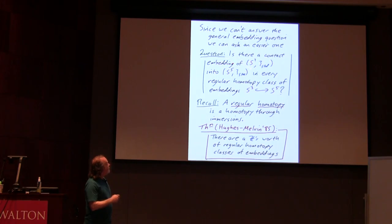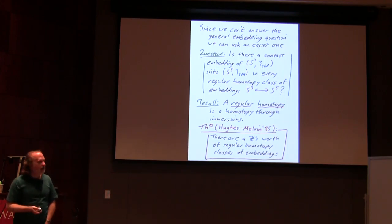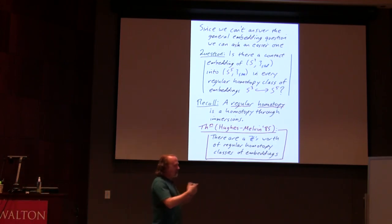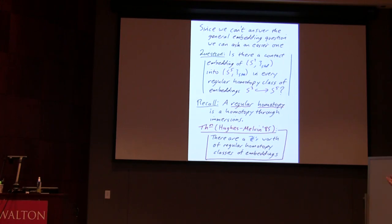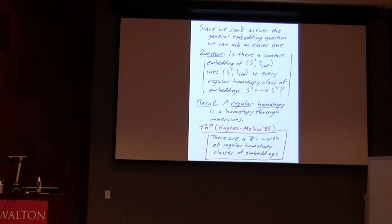At the moment, we don't really know how to get all embeddings. So if you can't get all embeddings, the next step you might try is regular homotopy classes. Is there a contact embedding of the standard contact structure on S3 in every regular homotopy class of embeddings? A regular homotopy class: if you have any immersion, a homotopy through immersions is called a regular homotopy. So regular homotopy classes of embeddings — you call two embeddings regular homotopic if there's an isotopy through immersions. This is much weaker than saying they're isotopic. For instance, every knot in S3 is regular homotopic to the unknot. But what about knots — three-dimensional S3 knotted in S5? There's a nice result of Hughes and Melvin from 1985 that there's a Z's worth of regular homotopy classes of embeddings of S3 in S5.